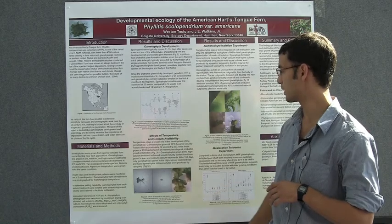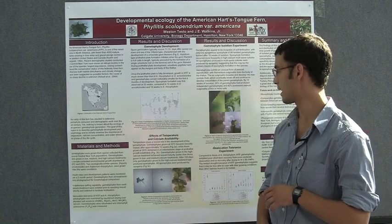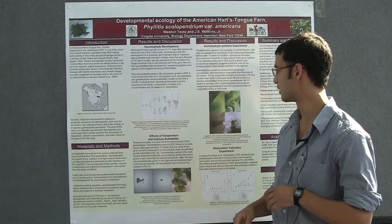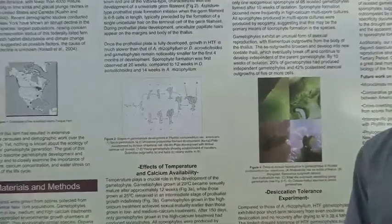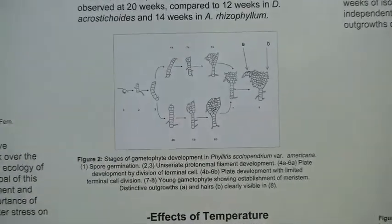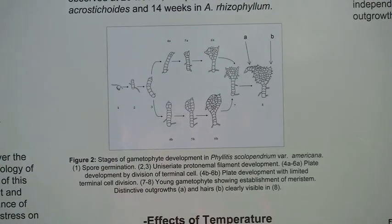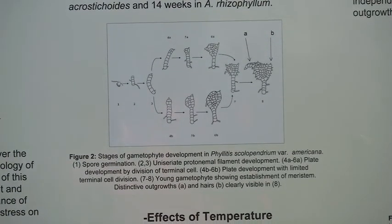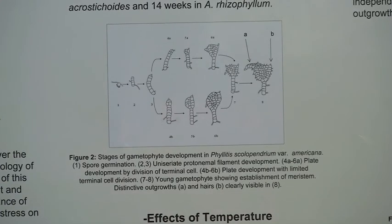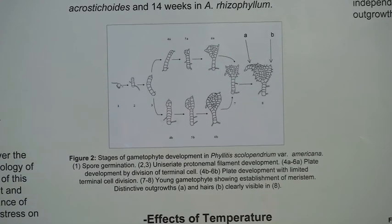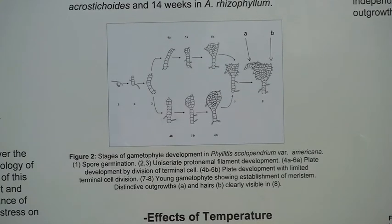Here are the growth rate and developmental patterns of the American Heartstongue Fern. It grows much slower than the other two species and also produced sporophytes at a much later time. It took 20 weeks for the Heartstongue Fern to produce its first sporophytes, whereas Deparia acrosticoides did so in 12 weeks and Asplenium rhizophyllum took 14 weeks to produce sporophytes.